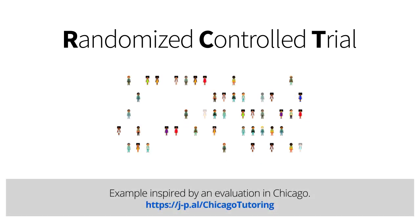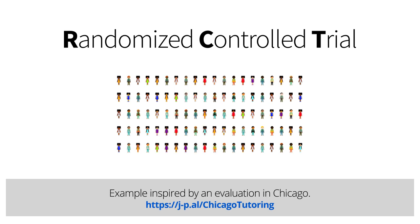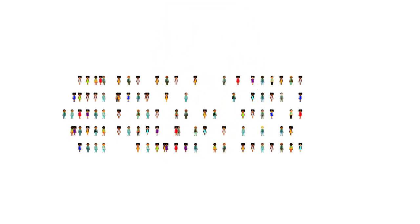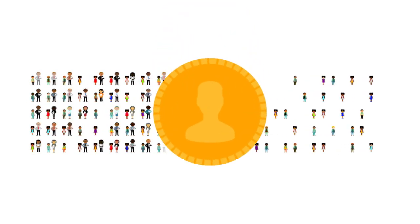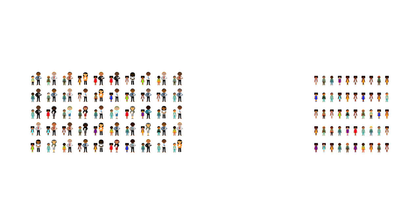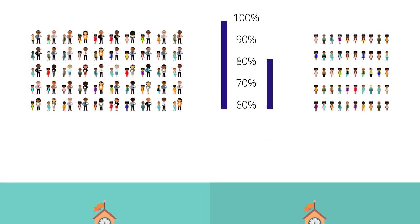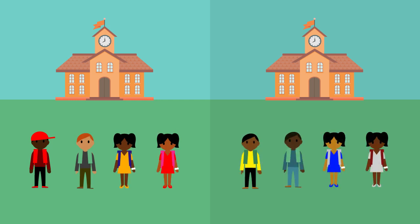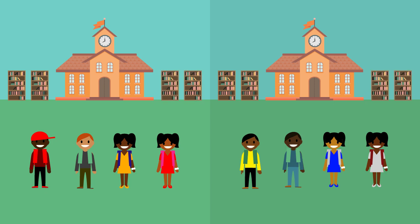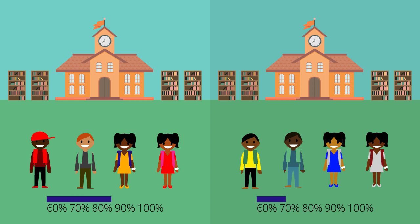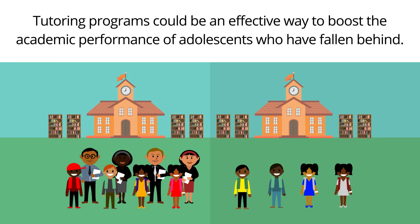Three J-PAL affiliates evaluated an intensive math tutoring program like the one we've described, using an RCT. They randomly selected some students to receive tutoring as part of the treatment group, while others were part of the control group and did not receive tutoring. At the end of the program, they compared the average scores. When students are randomly assigned to either group, two groups are created that, prior to the program, are the same on average across several metrics — including level of school resources, motivation, teacher quality, and previous test scores. Therefore, any difference in average test scores at the end must be due to the tutoring program, suggesting that tutoring programs could be an effective way to boost the academic performance of adolescents who have fallen behind.